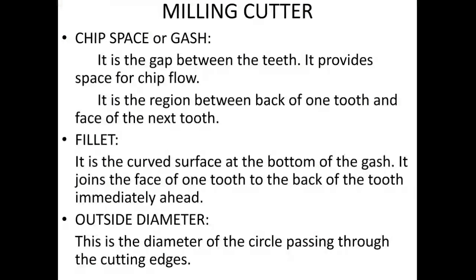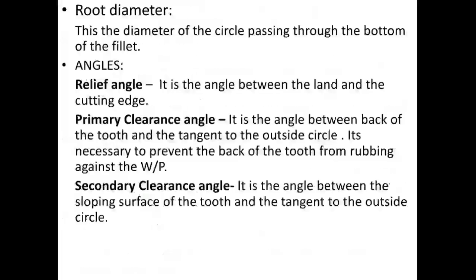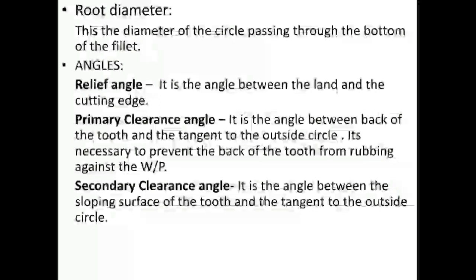Outside diameter is the diameter of the circle passing through the cutting edges. Root diameter is the diameter of the circle passing through the bottom of the fillet.